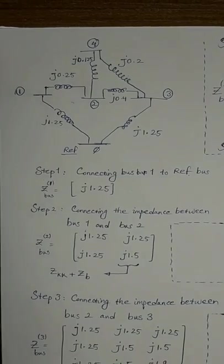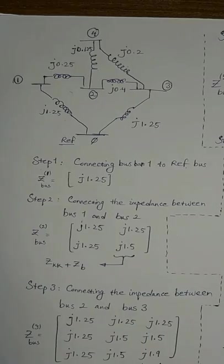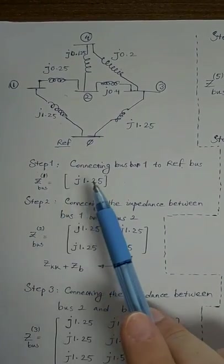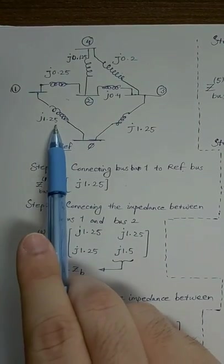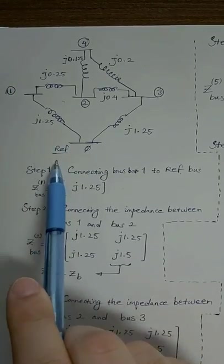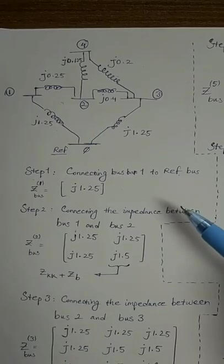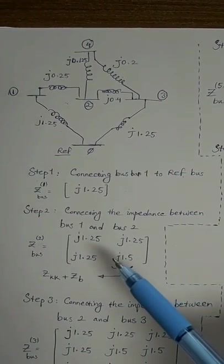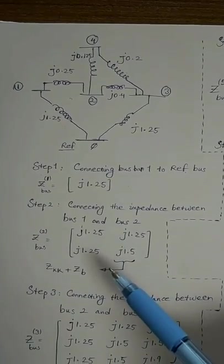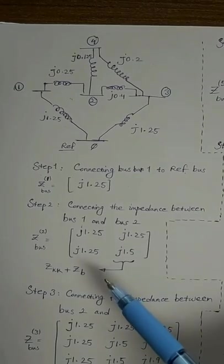So let's get started to see how we're going to create this Z-bus. Step one would be, according to the previous instruction, adding a new impedance between a new bus bar and the reference bus bar. That's why we call it step one: connecting an impedance between bus bar one and the reference bus bar. In this case, we don't have any original impedance before.